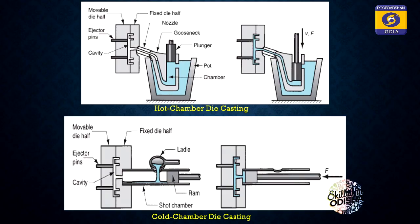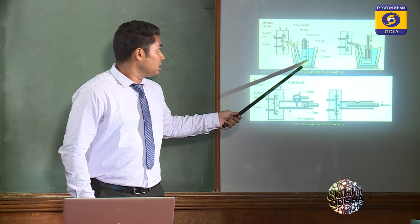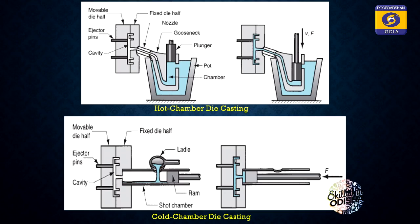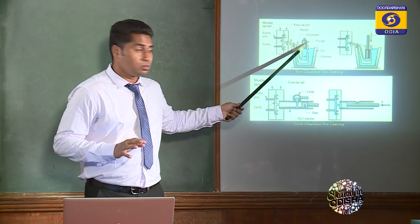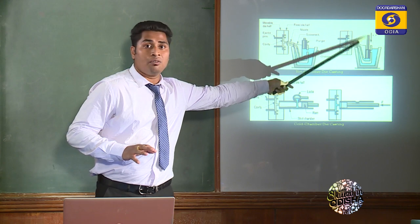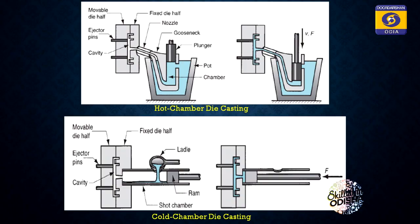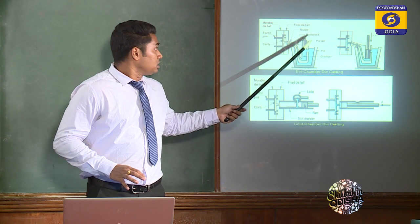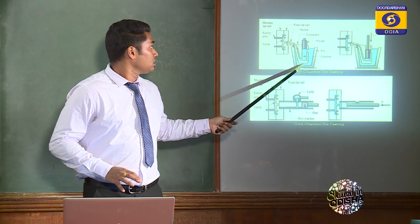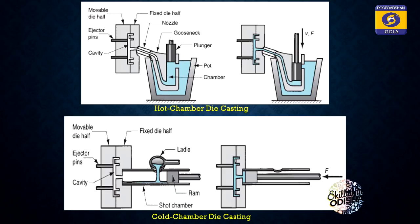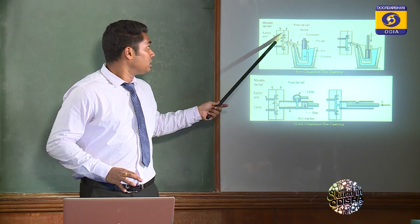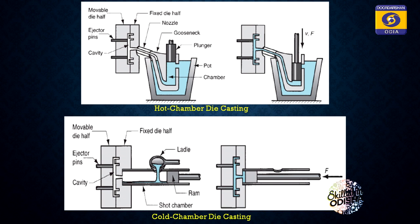This is the Hot Chamber Die Casting Machine. You can see the melting unit, which is an integral part of this machine. This is the plunger — the direction of movement of the plunger is downward. When the plunger moves downward, it forces the molten liquid metal to flow through the goose neck, a very important part of this machine. The liquid molten metal flows through the goose neck and fills the mold cavity.